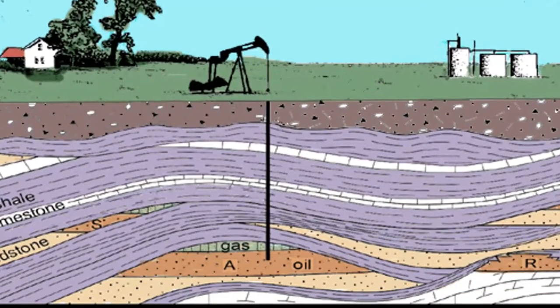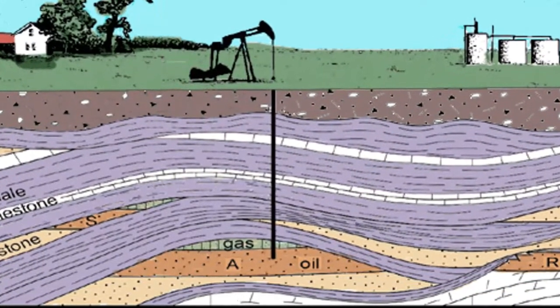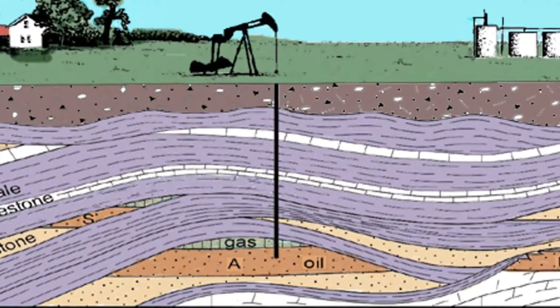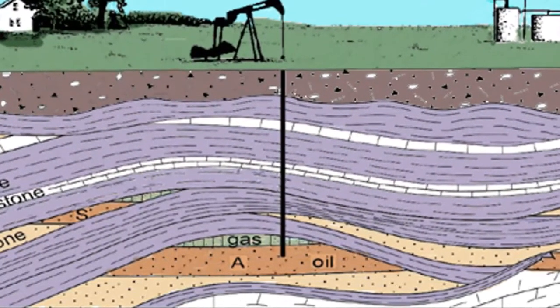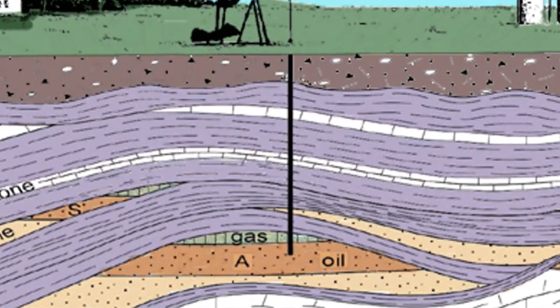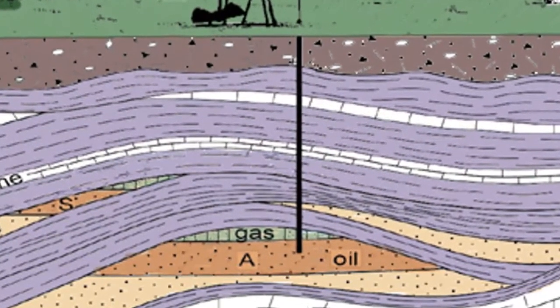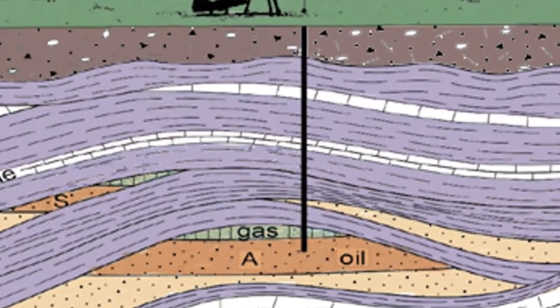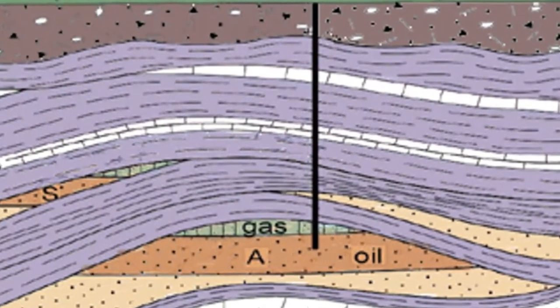One of the world's largest oil fields, El Nala in Saudi Arabia, is the result of an anticlinal trap, as is the famous Teapot Dome in Wyoming.